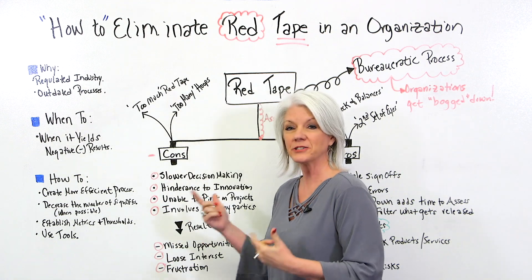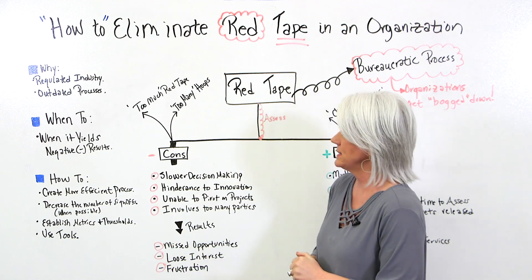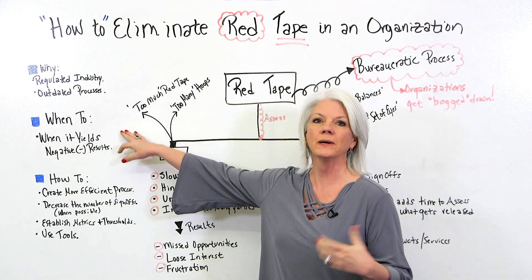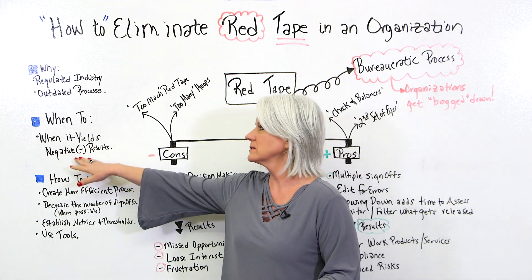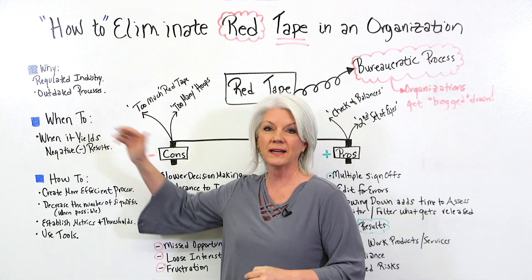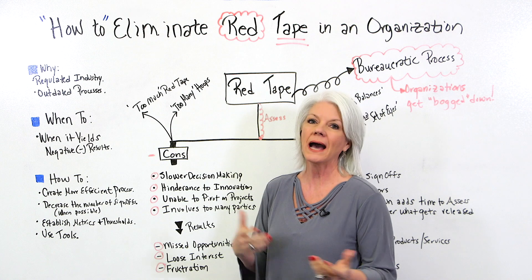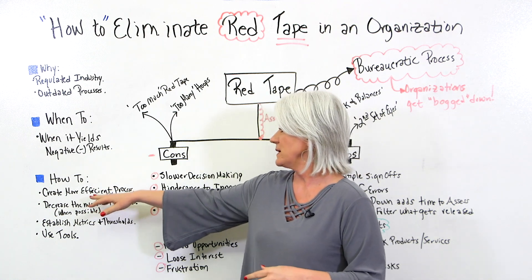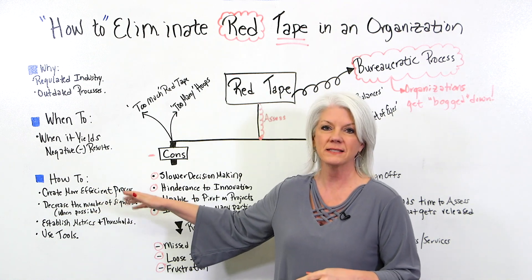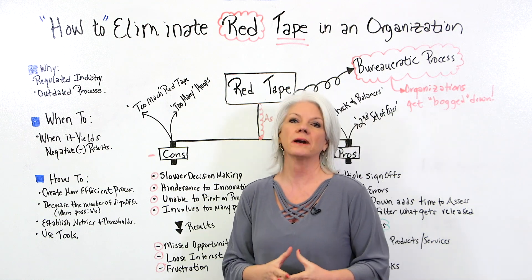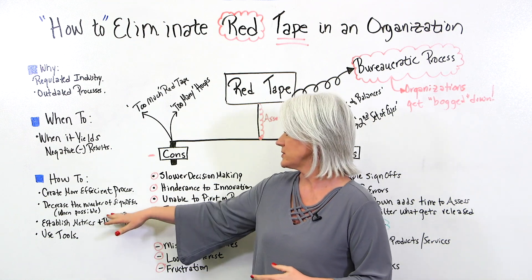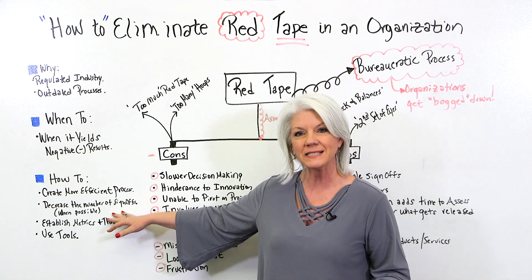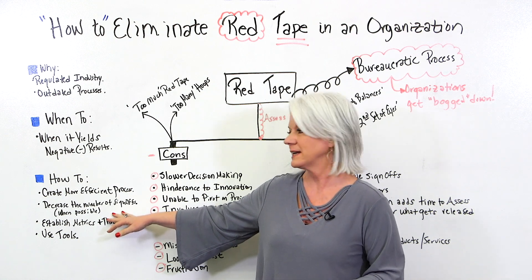So by determining if it's good or bad red tape, you can determine when to eliminate it. When it yields negative results, we want to eliminate that red tape. First of all, we create more efficient processes. With those efficient processes, we get to determine if the number of sign-offs are accurate — maybe we don't need so many people signing off anymore.